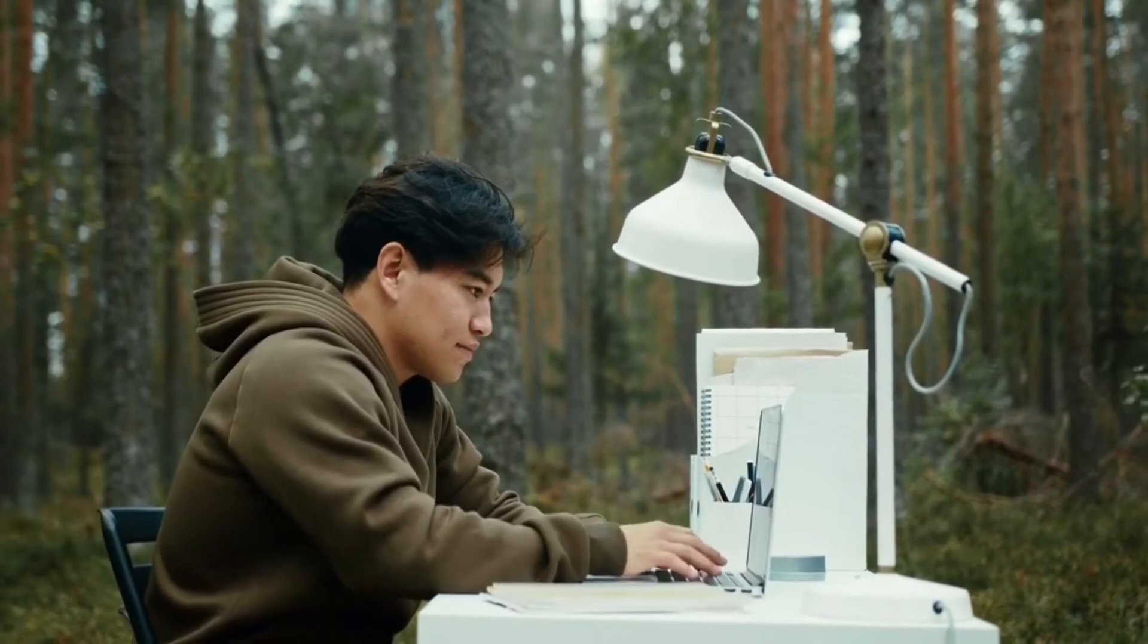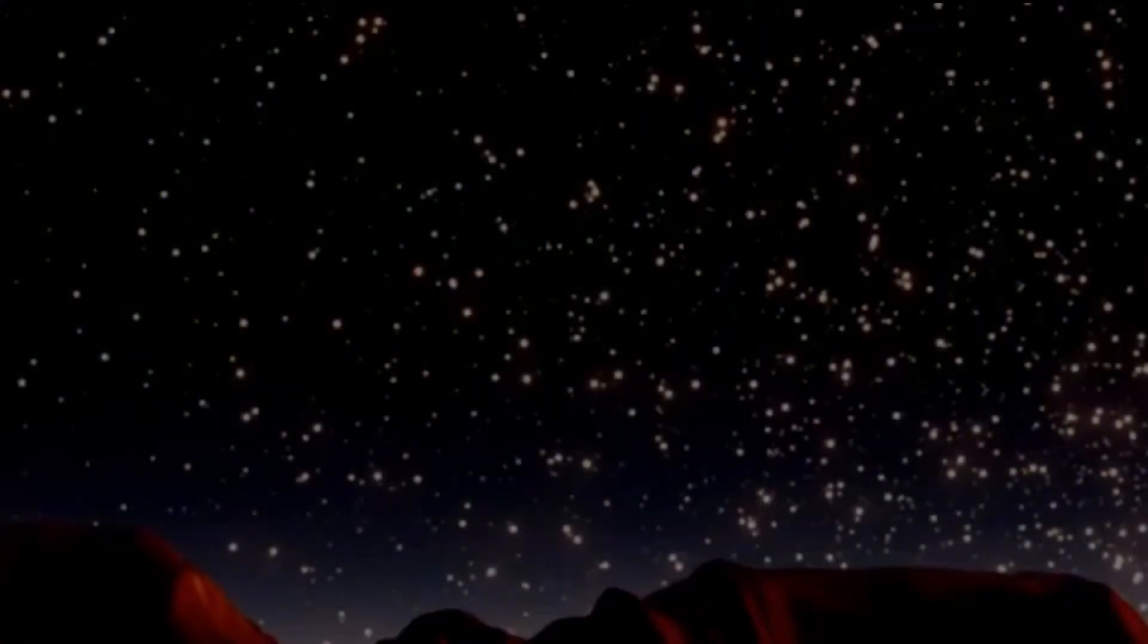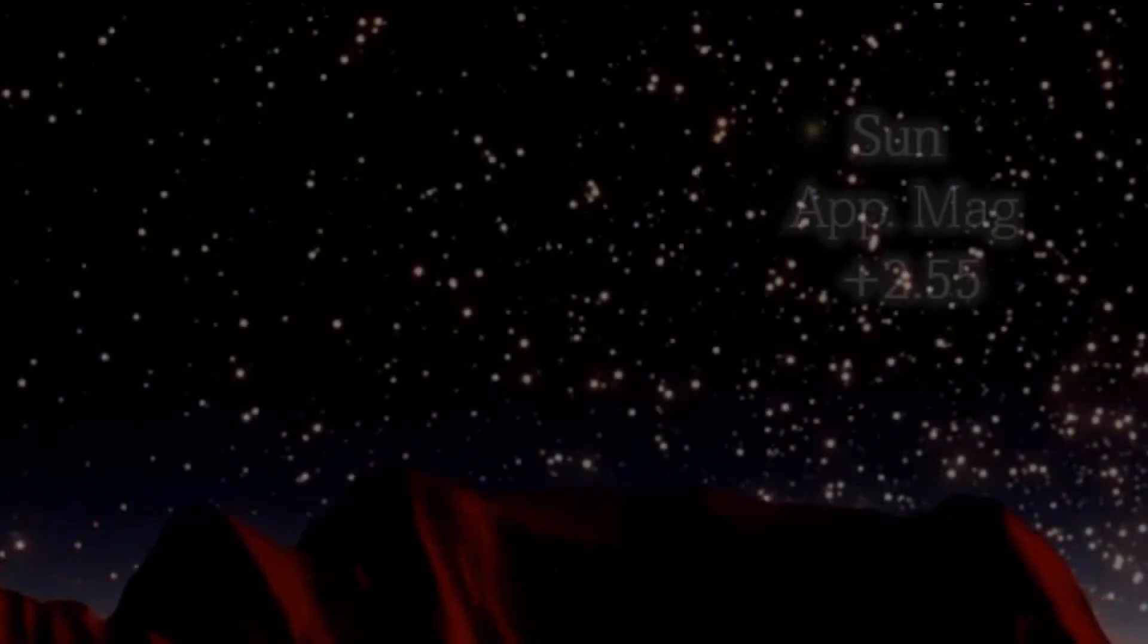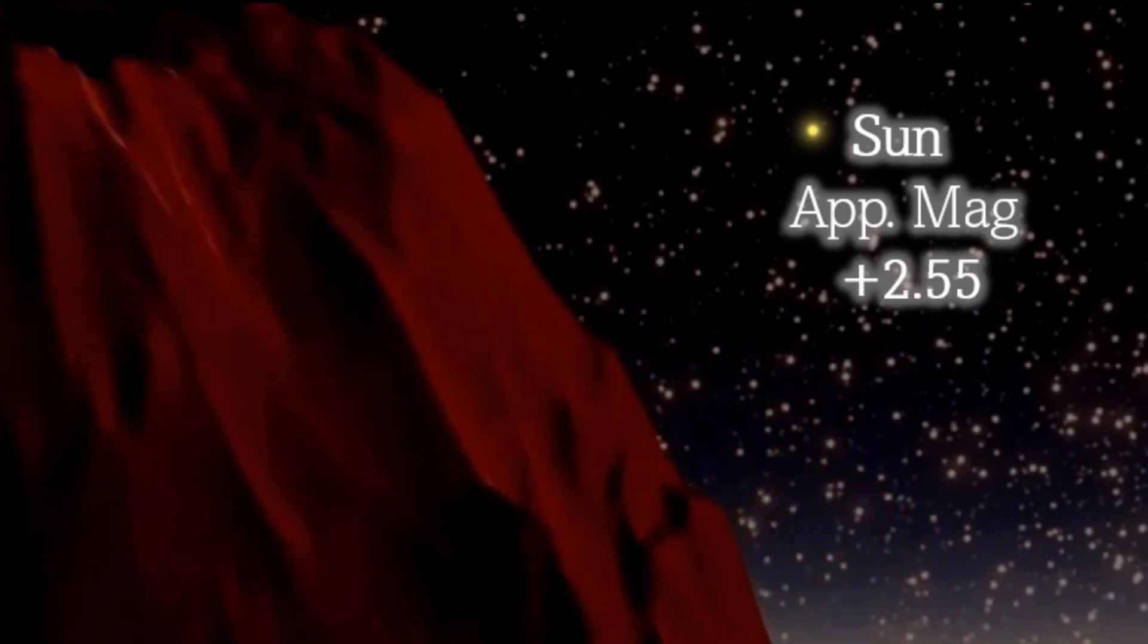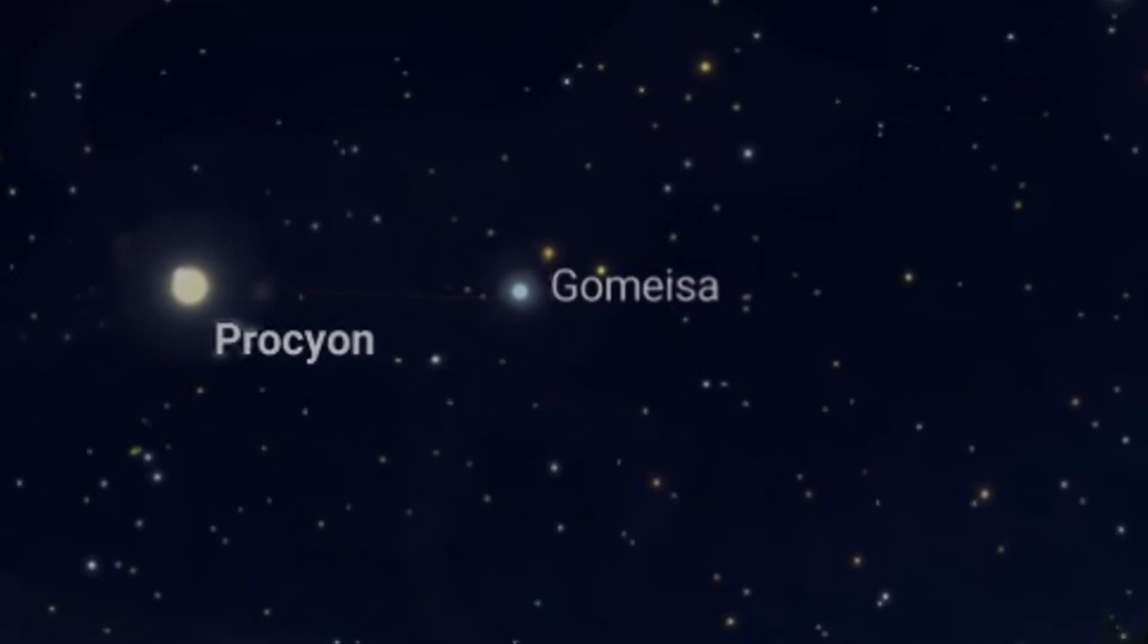It would be an impressive sight no doubt, and Procyon is actually the official name for the star Alpha Canis Minoris A. If we turn away from the system back towards our own sun, our sun would appear at a magnitude plus 2.55 star in the constellation of Aquila. Canis Minor would of course be missing its brightest star, to be replaced by Gomesa.